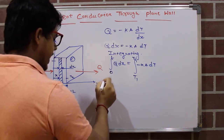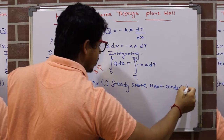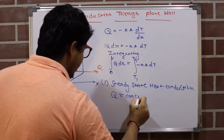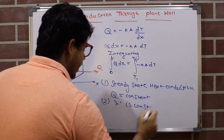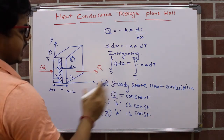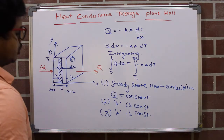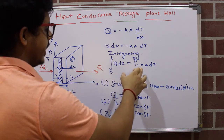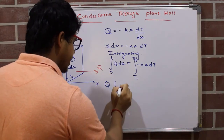As noted, we have steady-state heat conduction, which means the heat transfer rate Q is constant throughout the wall. We also assume k is constant because the wall material is homogeneous and isotropic, and area A is also constant. Since Q is constant we can take it out of the integral, and since kA is constant we can take it out of the integral as well.